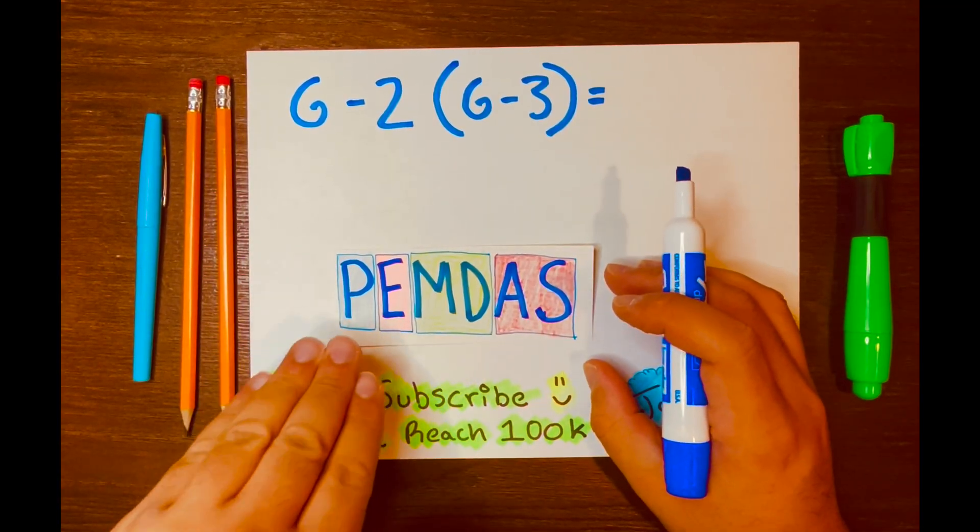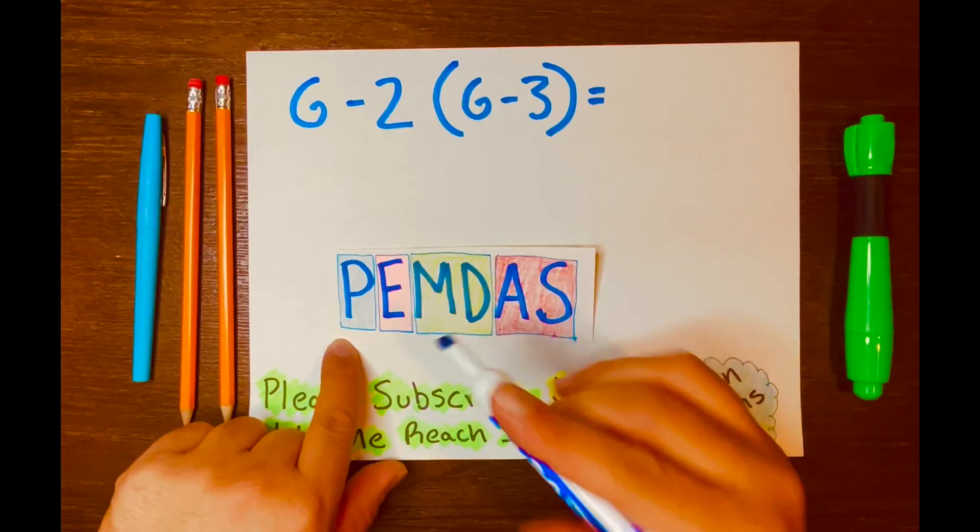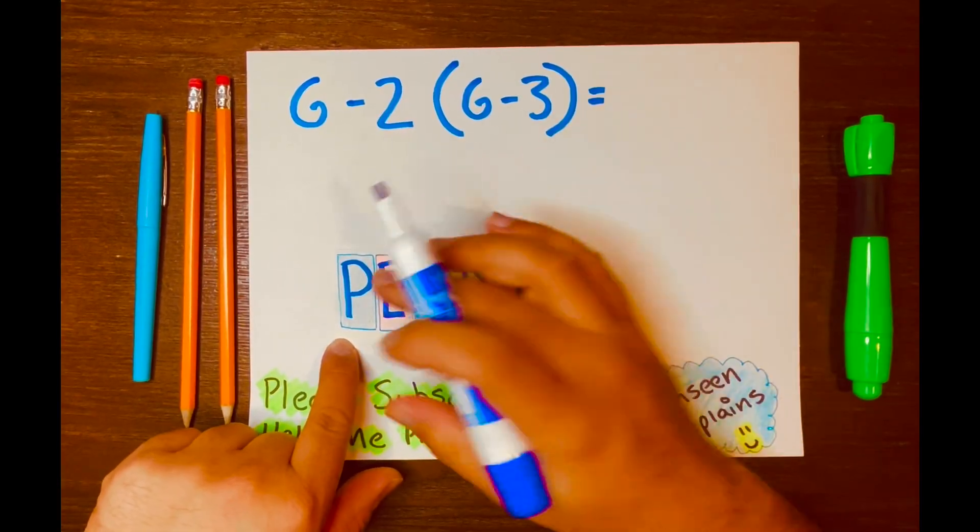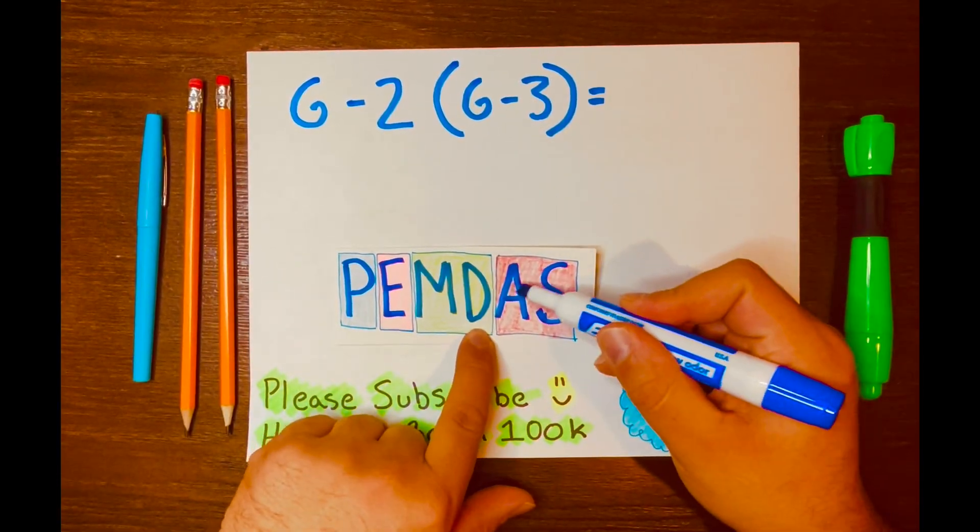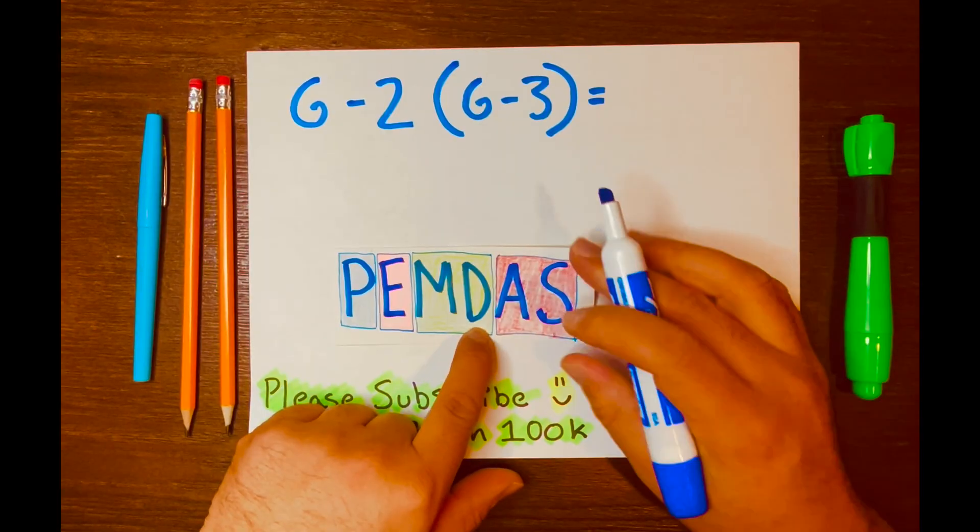PEMDAS has four different levels. Parentheses has the highest level, and addition and subtraction is the lowest level.